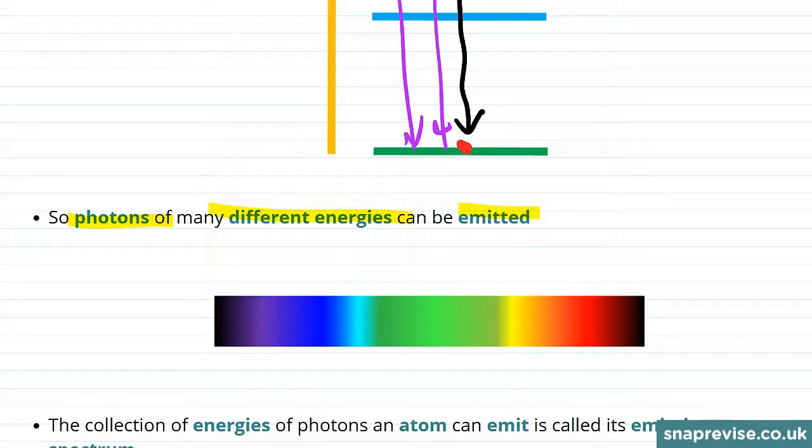By the electrons moving around the different energy levels in the atom, they could emit photons in this energy range, or this energy range, or even this one.